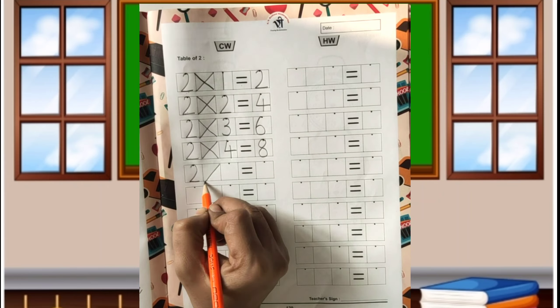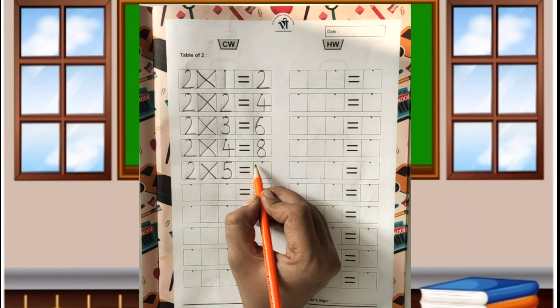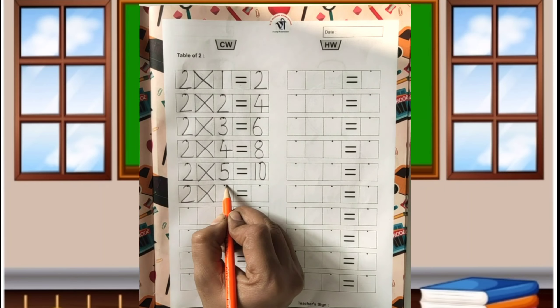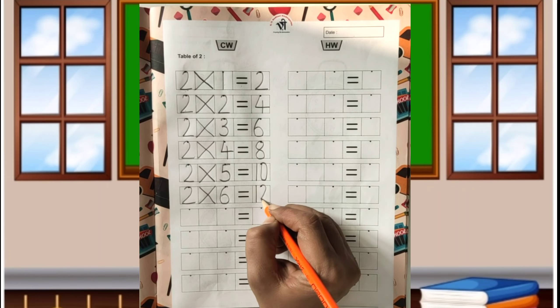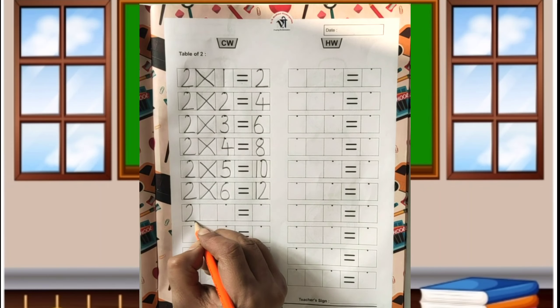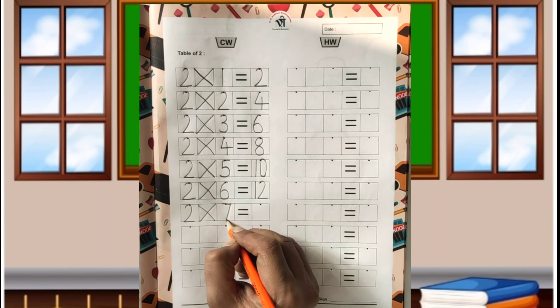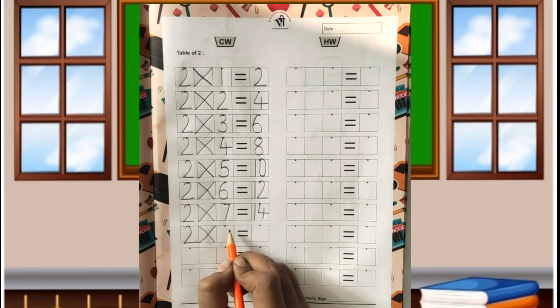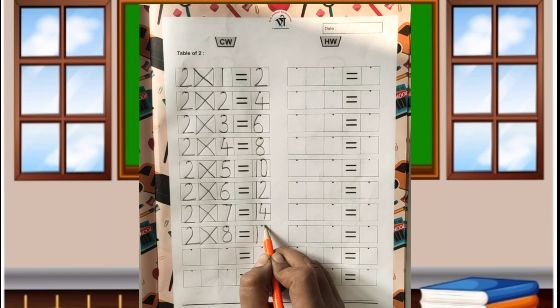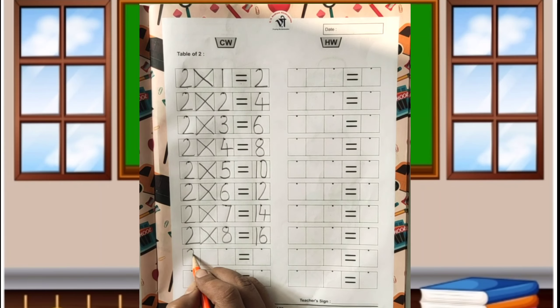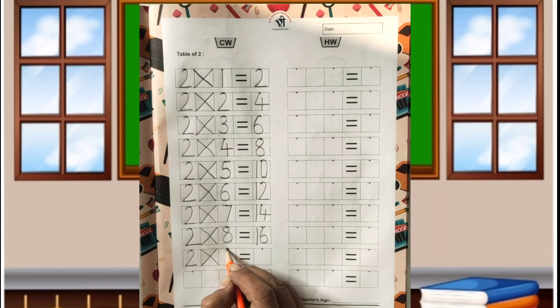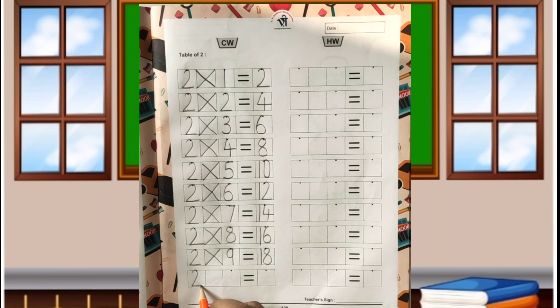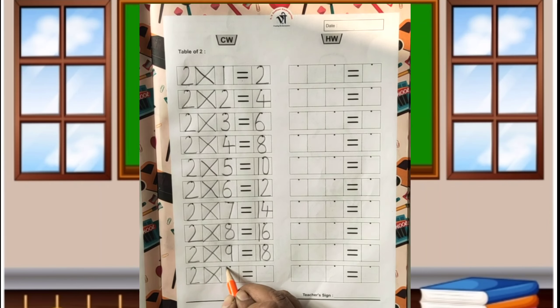2-5's are 10, 2-6's are 12, 2-7's are 14, 2-8's are 16, 2-9's are 18, 2-10's are 20.